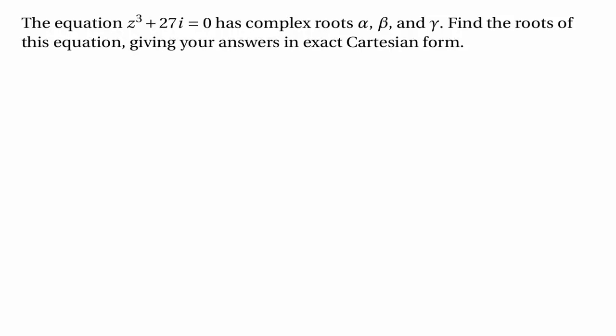By far the best way of answering a question like this is to write z in modulus-argument form. So we'll say that z is equal to r e to the i theta. It follows from that that the cube of r e to the i theta plus 27i is equal to zero, and now we can solve this equation to find out what r and theta are.